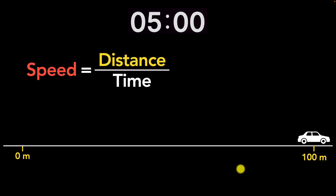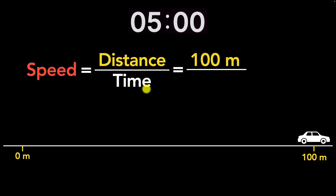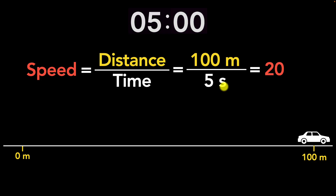Let's start with speed. We define speed as the distance traveled by an object divided by the time taken to travel that distance. In our example, the distance traveled is 100 meters and the time taken is 5 seconds. So it's going to be 100 meters divided by 5 seconds. 100 divided by 5 is 20, and the unit is meters divided by seconds — so the speed is 20 meters per second. This tells us the car is traveling 20 meters every second. That's how you think about speed.